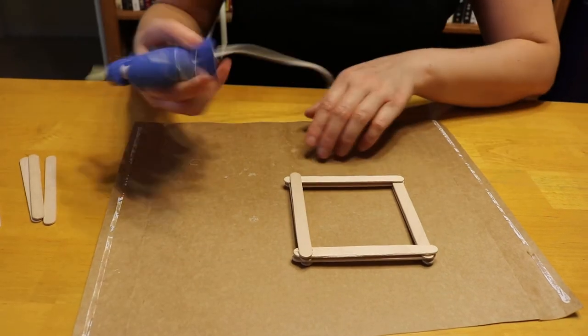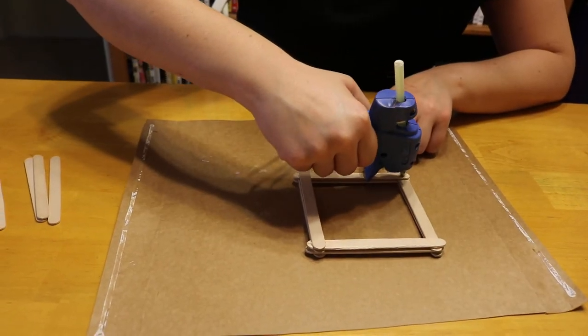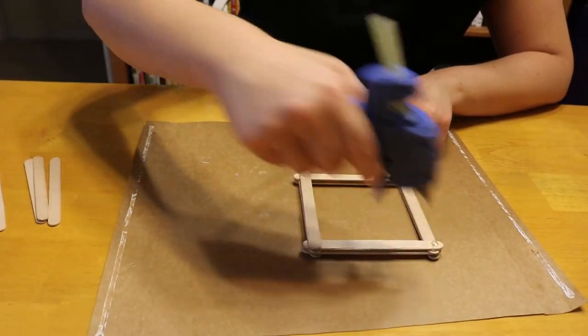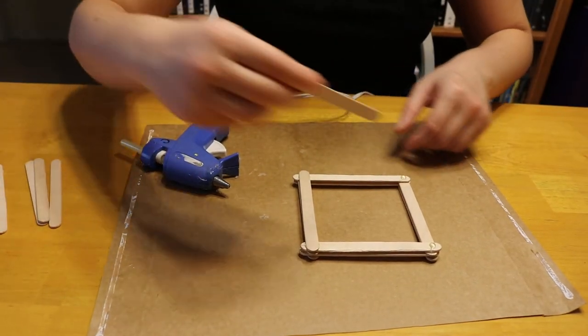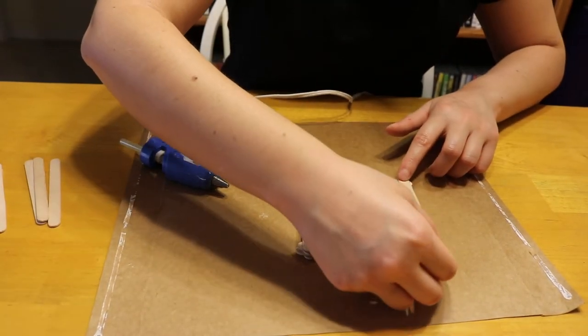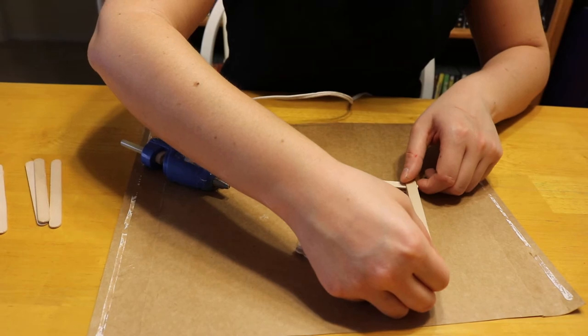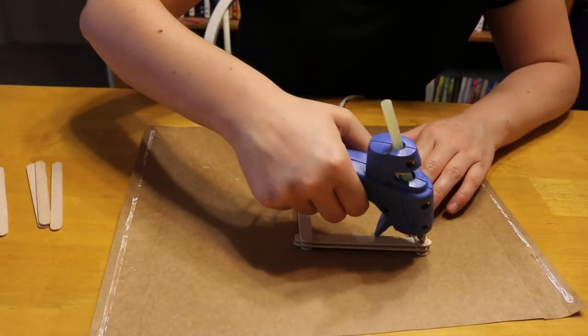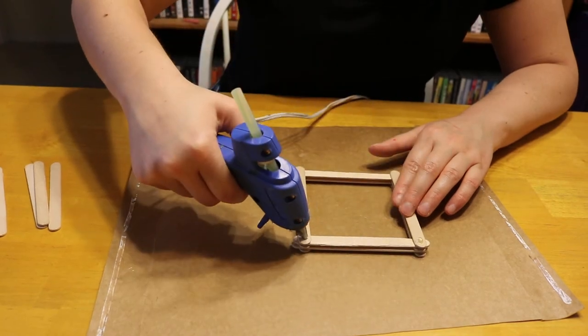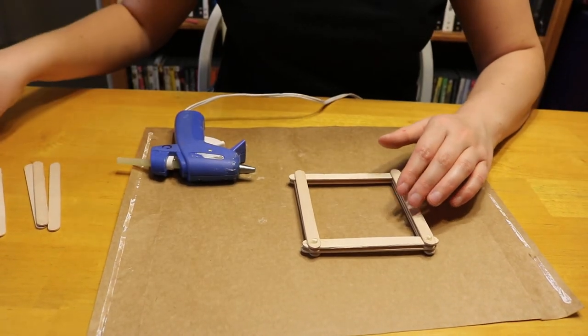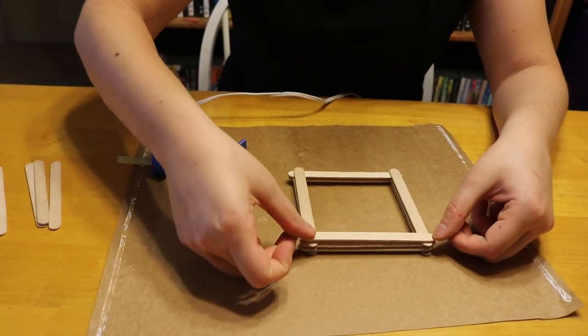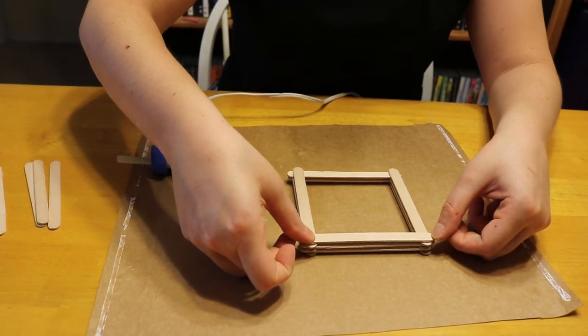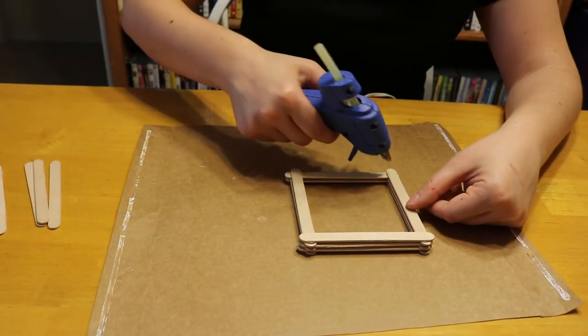So that one's got three. That one's got three. The other side's got half two, so I'm going to do one more over there. And one more over there. And one more down here.